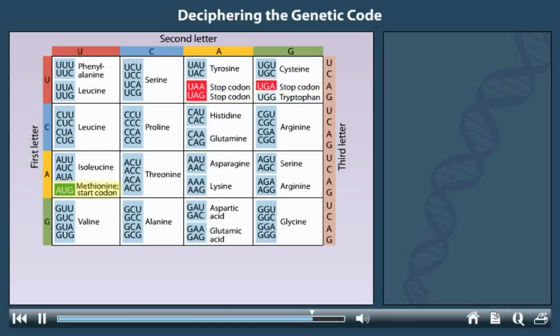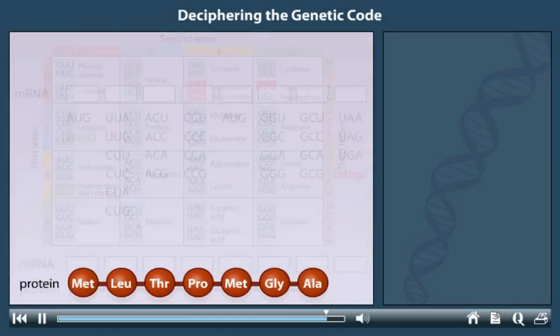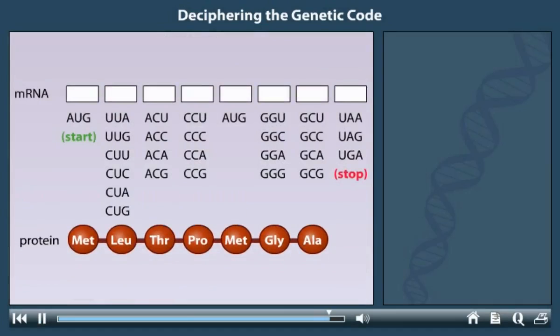Using the genetic code table, construct an RNA molecule that would code for the series of amino acids in this protein. Drag the correct codons to the boxes above the amino acids. Notice that more than one codon will work for most of these amino acids. The genetic code is therefore redundant. However, the code is not ambiguous. For example, CCU specifies proline, but it does not specify any other amino acids such as leucine or alanine.